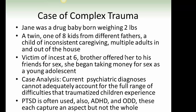Case example: Jane was a drug baby born weighing two pounds, a twin, one of eight kids from different fathers, a child of inconsistent caregiving with multiple adults in and out of the house. She was a victim of incest at age six; her brother offered her to his friend for sex. She began taking money for sex as a young adolescent. Case analysis: current psychiatric diagnoses cannot adequately account for the full range of difficulties that traumatized children experience. PTSD is often used, as well as ADHD and ODD — these each capture an aspect, but not the whole picture.